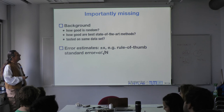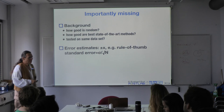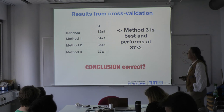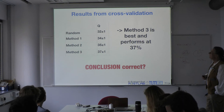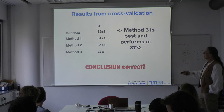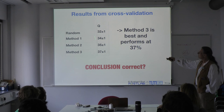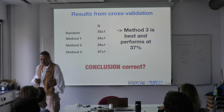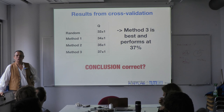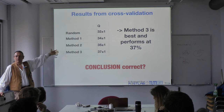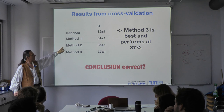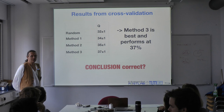Another thing that was missing was: how good is random, and what is the best method achievable? You have to put it in perspective of random. In this example, with an error estimate of 0.5 percentage points, method 3 is clearly away from method 2. But you also see that all of these methods are pretty close to random — yes, you do improve through better features, but you're not improving by much. And that brings us again to: is that scientifically significant?